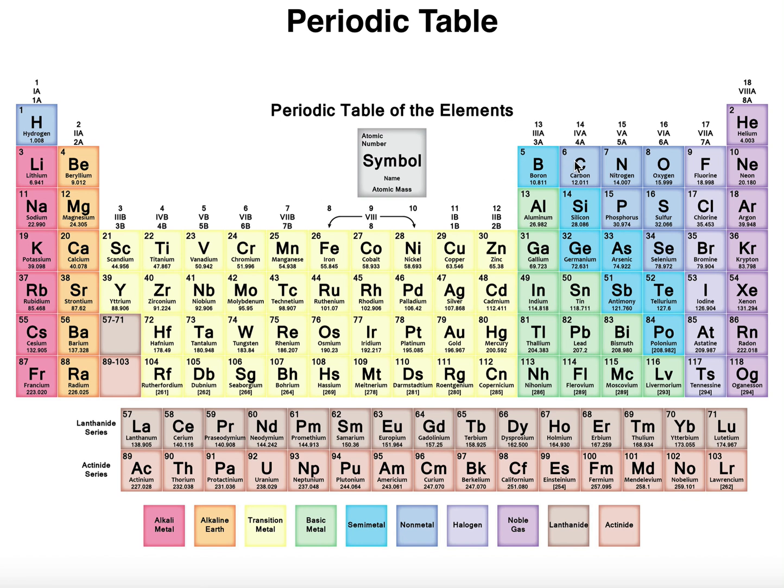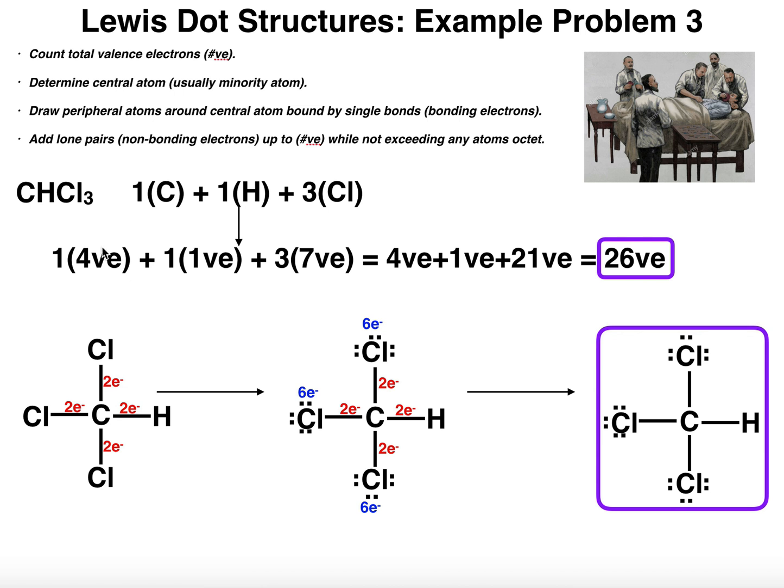Carbon is in column four or group four because we have column one, column two with beryllium, we skip all the transition metals, boron is column three, four, five, six, seven, and then helium down there is group eight. Carbon's in group four, so carbon will have four valence electrons.